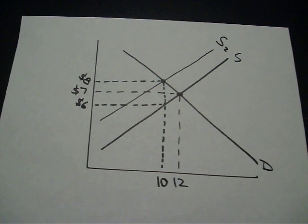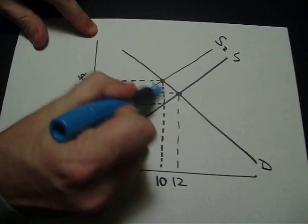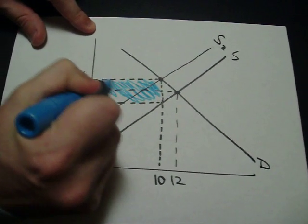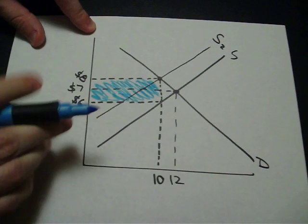Now this box that we formed, this whole box that I'm shading in here in blue, is the revenue collected by the government, so that whole blue area.